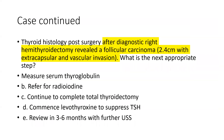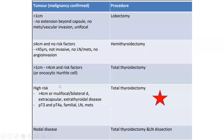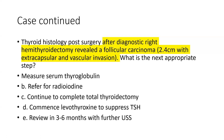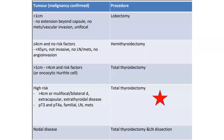Let's look at the histology from the diagnostic hemithyroidectomy. Thyroid histology post-hemithyroidectomy revealed follicular cancer, approximately 2.4 cm, with evidence of extracapsular and vascular invasion. What should be the next appropriate step in management? Should we measure serum thyroglobulin, refer for radioiodine, continue to complete total thyroidectomy, commence levothyroxine to suppress TSH, or review in three to six months? Clearly, the answer is to proceed to total thyroidectomy, as the patient was found to have follicular cancer with extracapsular and vascular invasion.